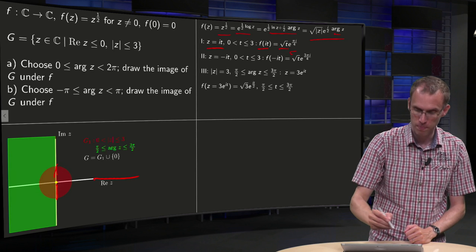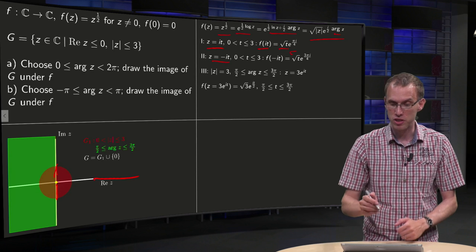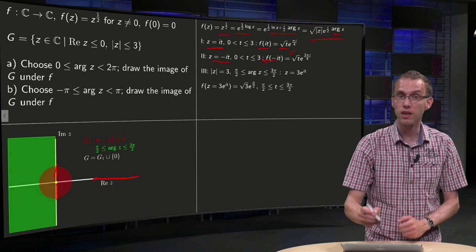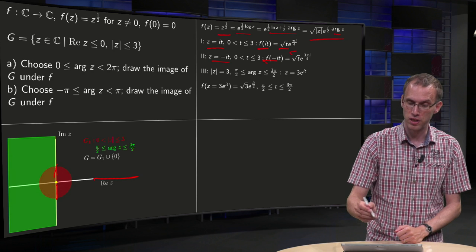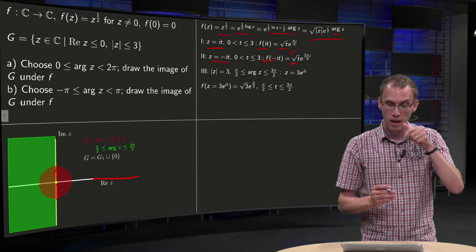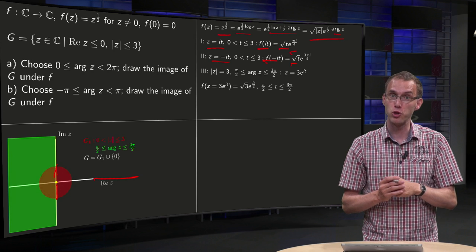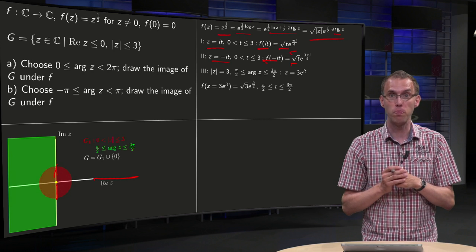Similarly, down here, z equals minus it. Almost the same, again, the modulus of your function is square root of t, but now your argument will be 3 pi over 2, because remember we took our argument between zero and 2 pi.